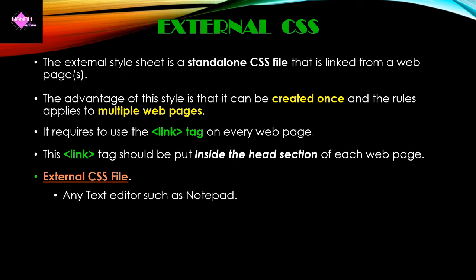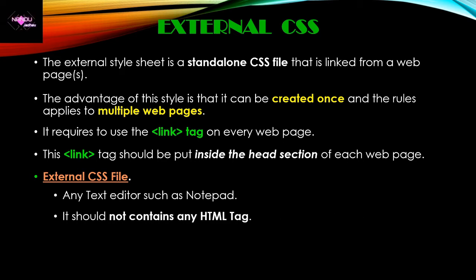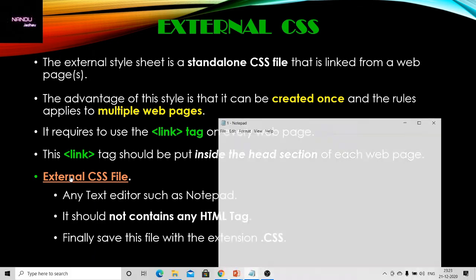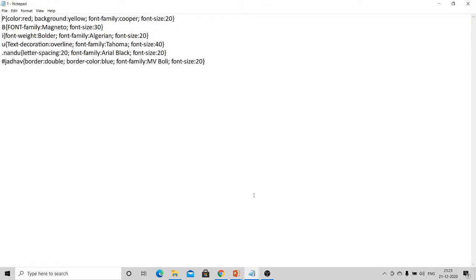To create an external CSS file, you use a simple regular text editor like Notepad. The external CSS file cannot contain any HTML tags. When you finish creating the contents of the external CSS file, you save it with the extension '.css'. The file structure in Notepad shows multiple selectors — p, b, i, u — from the first line to the last, with no HTML tags.